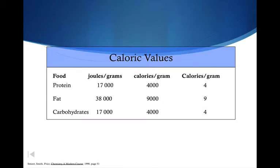Caloric values — when you talk about calories that are in different substances, this is the energy that they contain. Notice you've got two different types of calories: the calorie with a small 'c', which is 4 joules per gram, compared to the Calorie with a big 'C', which is 4,000 per gram. You need to really pay attention whether the big C or the little c is being used. Quite often when you have food packages showing the amount of calories, they're showing the amount of big C Calories, which is actually equal to about 17,000 joules for 4 Calories.